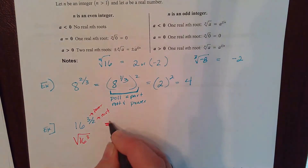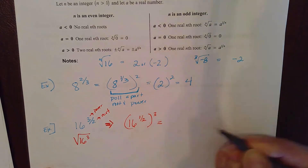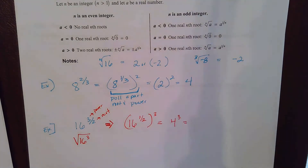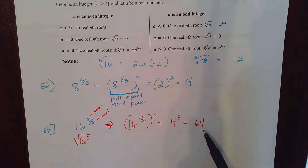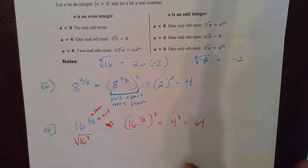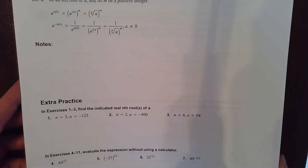If I'm going to ask you to evaluate 16 to the 3/2 without a calculator, I'd have you separate the root from the power — pull those two things apart. Then 16 to the 1/2 means the square root of 16, which is 4, and then 4 to the third power is 64. On your homework and practice I'll be asking you to evaluate without a calculator. I know you'll get the right answer with a calculator, but I want to see that you have the process correct.